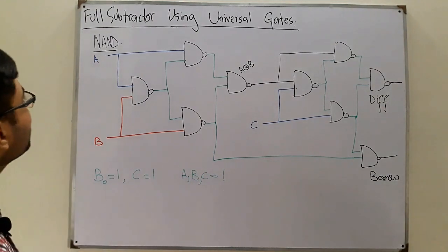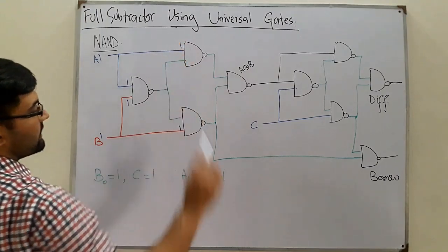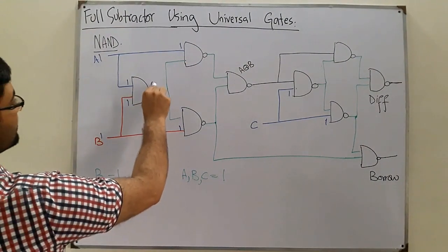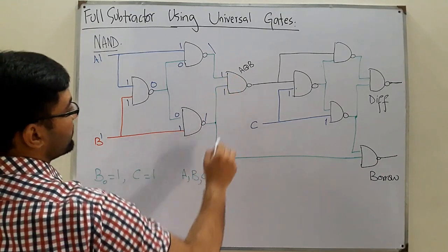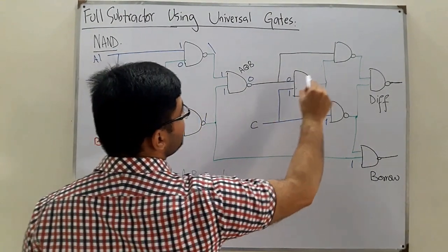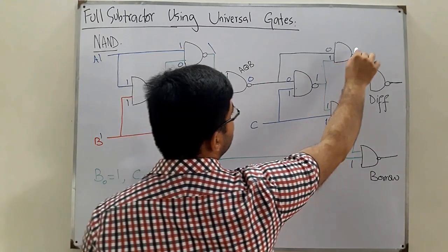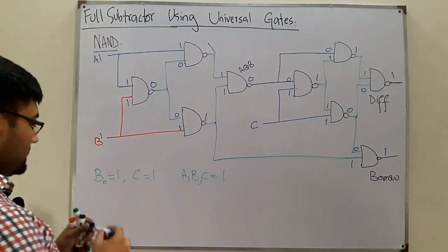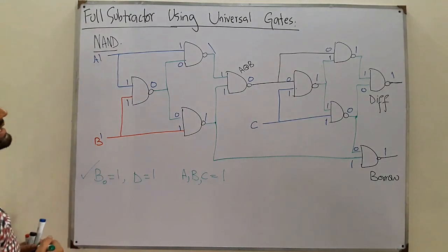With A=1, B=1, C=1: 1 NAND 1 = 0, so we get zeros at those outputs. 1 NAND 0 = 1 at the next stage. 1 NAND 1 = 0 again; zero comes through both branches. 0 NAND 1 = 1 at two points. 1 NAND 1 = 0 and 0 NAND 1 = 1, giving borrow = 1 and difference = 1. This matches the expected truth table output — first case verified.